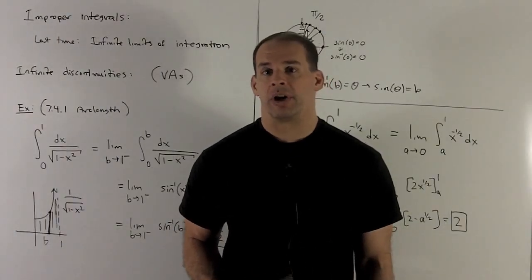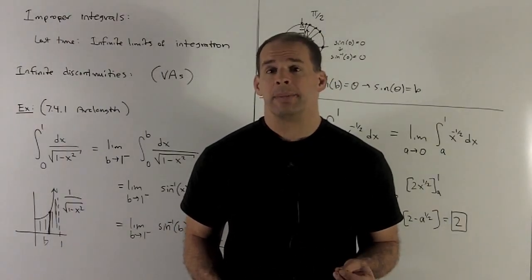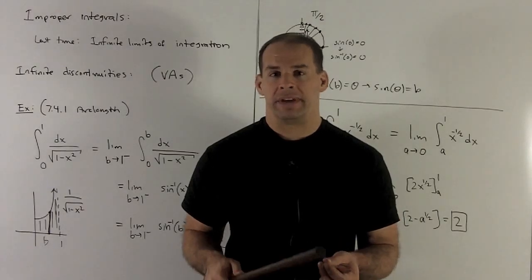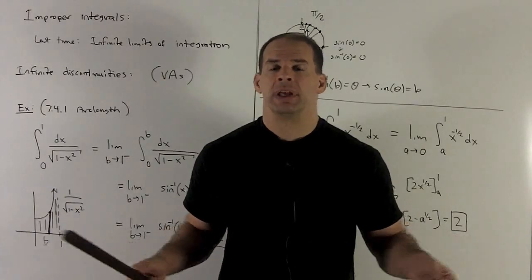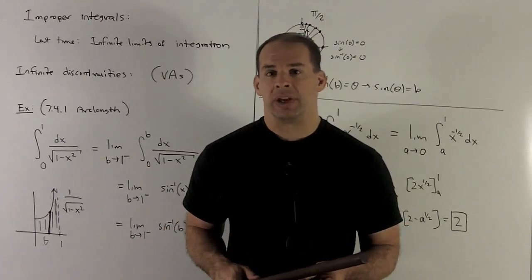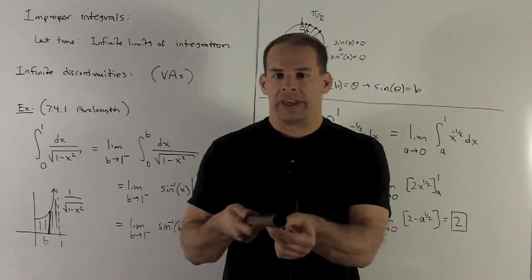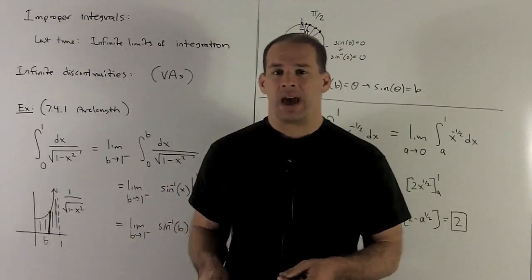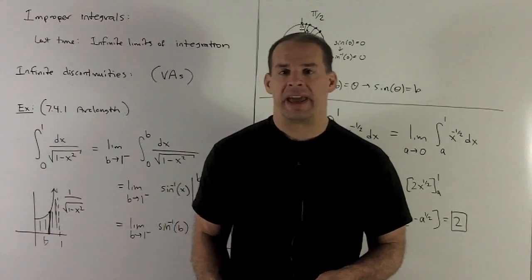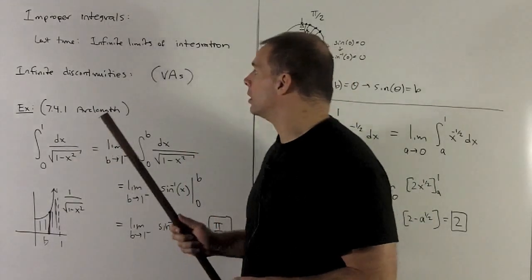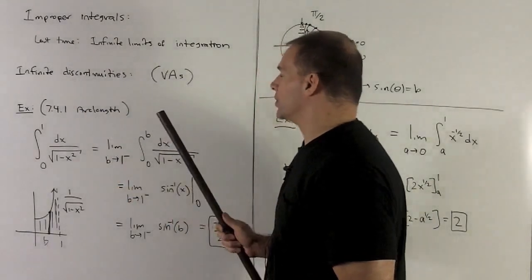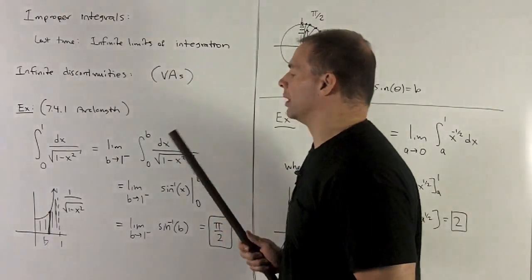So let's look at a different type of improper integral. Last time I looked at what happened when we had infinite limits of integration. Now I want to consider what happens when we integrate up against a vertical asymptote. Before the infinities went out this way, now our infinity is going to go up and down. We're going to call these infinite discontinuities, where vertical asymptotes appear.